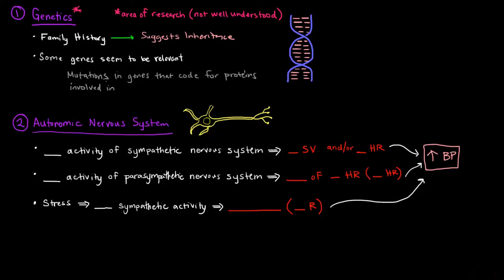For instance, mutations in genes coding for proteins involved in handling salt by the kidneys could explain why some people have a higher likelihood of developing hypertension. Their kidneys may handle salt in a way that raises blood pressure, and that trait is heritable — passed from parent to child. There is some genetic basis, though it isn't fully understood yet.